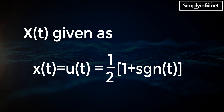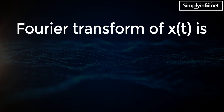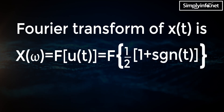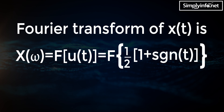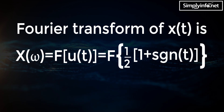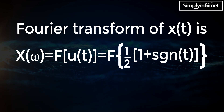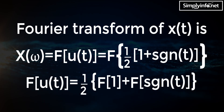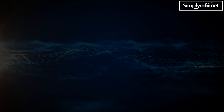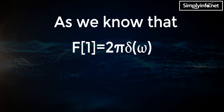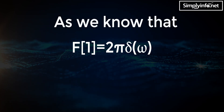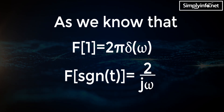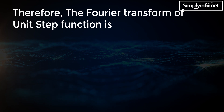The Fourier transform of x(t) is X(ω) = F{u(t)} = F{1/2 · (1 + sgn(t))} = 1/2 · (F{1} + F{sgn(t)}). As we know, F{1} equals 2π·δ(ω), and F{sgn(t)} equals 2/(jω).